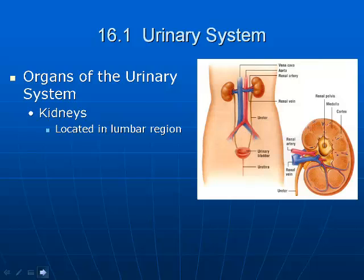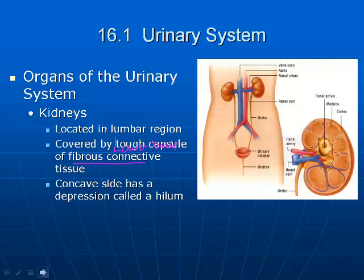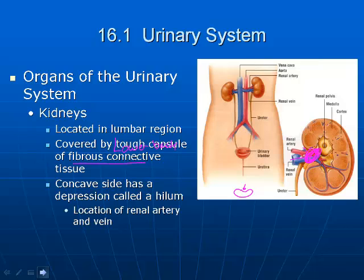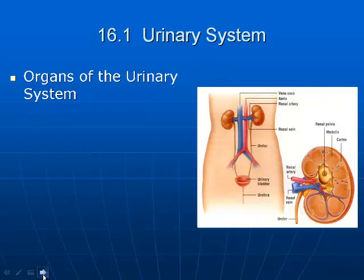The kidneys are located in the lumbar region — the lower back. They're covered by fibrous connective tissue. There's also a structure called the hilum, which is the depression on the kidney — similar to the indent you see on a kidney bean — and that's where the renal artery and vein enter and exit.